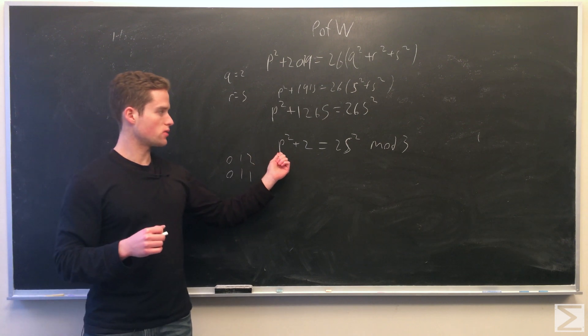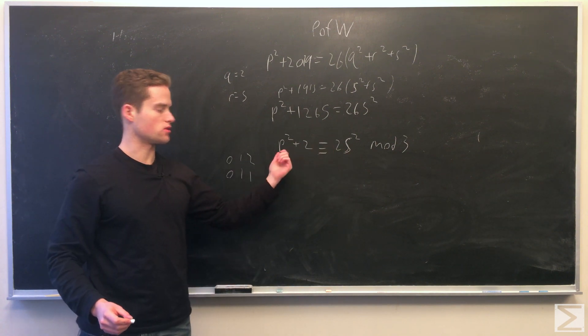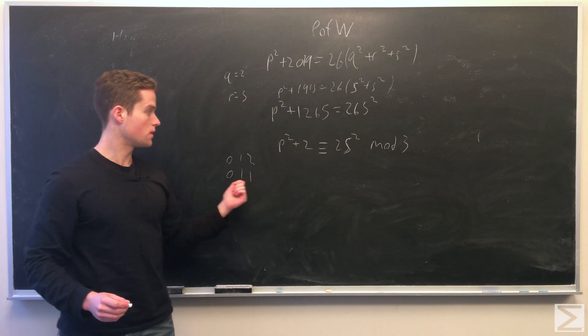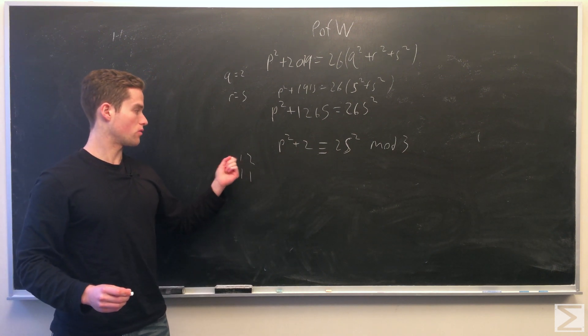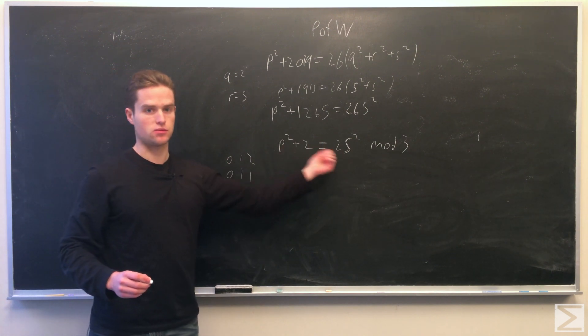If we say p squared congruent to s squared congruent to 1, we have 1 plus 2 congruent to 2 times 1, which is just 3 congruent to 2, or 0 congruent to 2, which is a contradiction. So we do not have both p squared congruent to s squared congruent to 1. That means one of these must be 3.